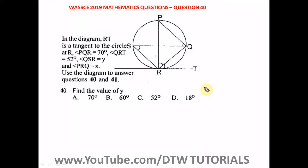Question 40 of the 2019 WASSCE mathematics past question. In the diagram, RT is a tangent to the circle at R. Angle PQR is equal to 70 degrees — this angle here is 70.